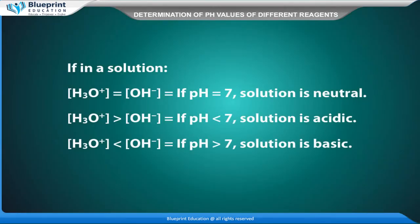If H3O⁺ equals OH⁻ and pH equals 7, the solution is neutral. If H3O⁺ is greater than OH⁻ and pH is less than 7, the solution is acidic. If H3O⁺ is less than OH⁻ and pH is greater than 7, the solution is basic.